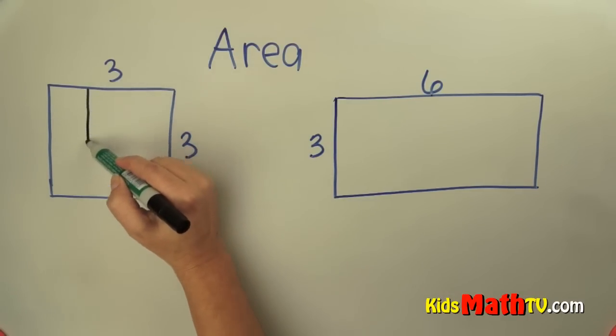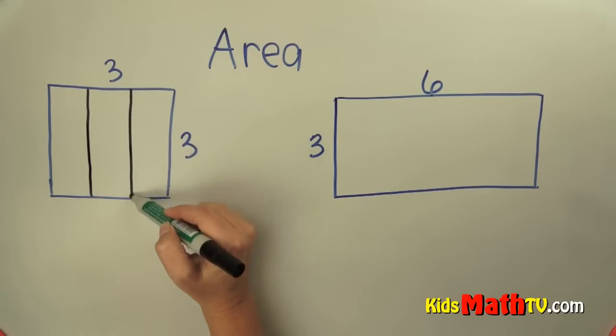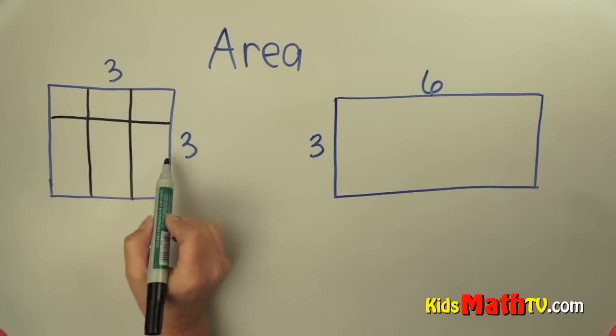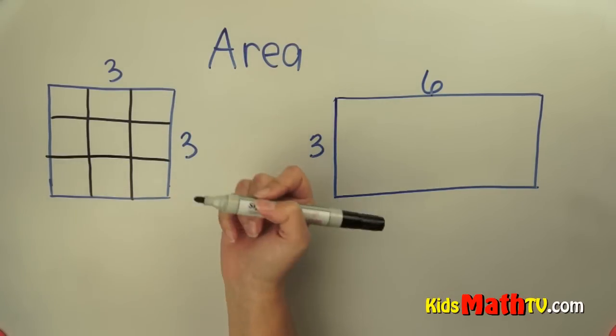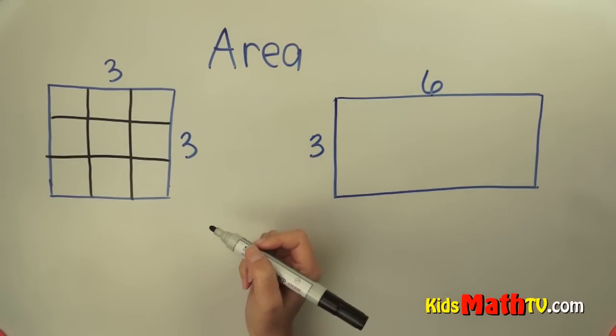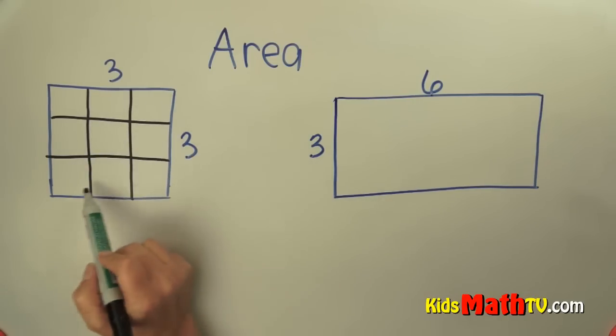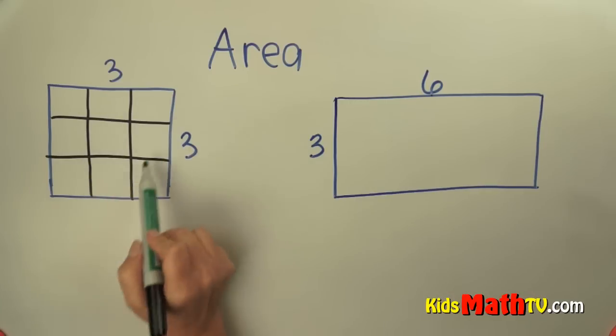If I split this up into three parts and three parts this way, there are three across and three down. Three units, whatever it is—might be centimeters, might be inches, might be kilometers. What I'm finding is how many squares are within this figure.